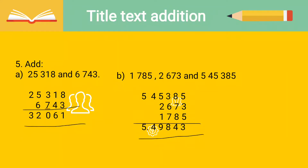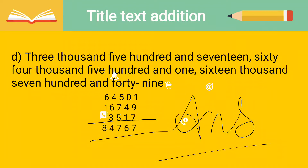For part C: they have given the numbers in number names — three thousand five hundred and seventeen, sixty-four thousand five hundred and one, sixteen thousand seven hundred and forty-nine. First we have to convert them into figures and then add all three. As you can see, I have converted them: 64,501, then 16,749, then 3,517. I added all three and the final answer is 84,767.